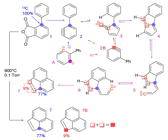An isotopic tracer, also called an isotopic marker or isotopic label, is used in chemistry and biochemistry to help understand chemical reactions and interactions. In this technique, one or more atoms of the molecule of interest is substituted for an atom of the same chemical element but of a different isotope, like a radioactive isotope used in radioactive tracing.